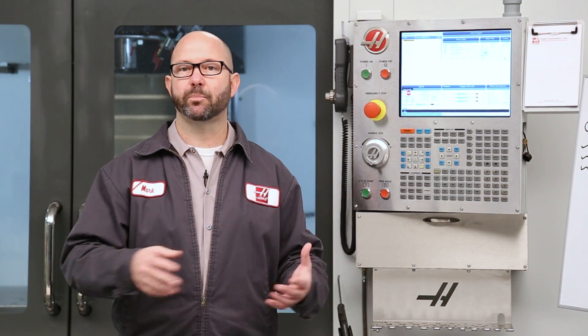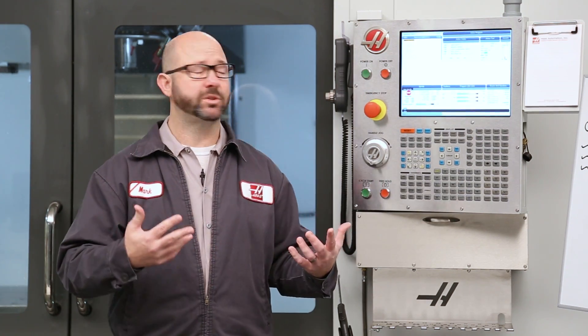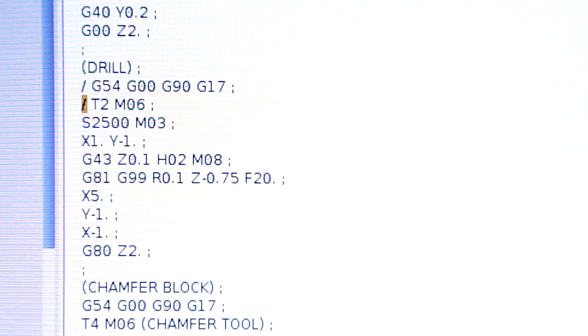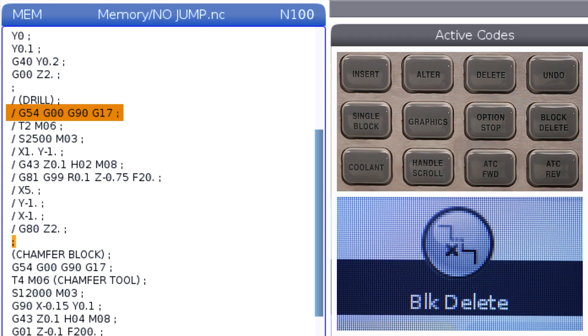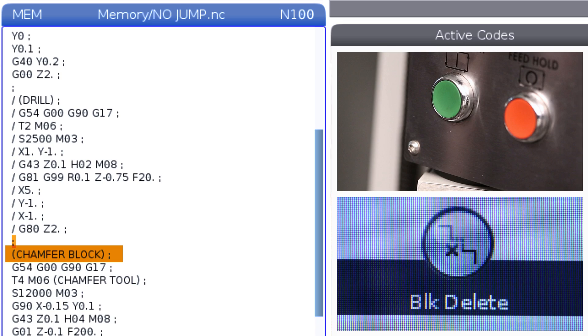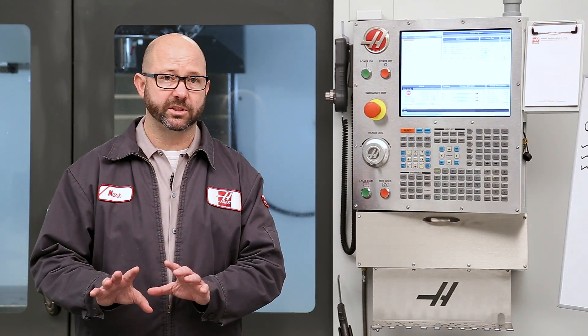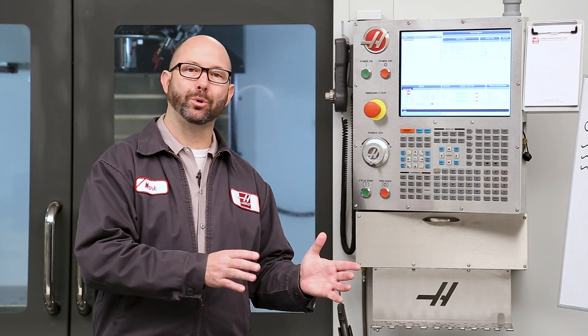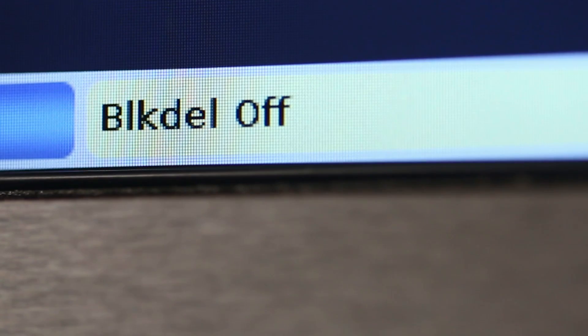So when would we want to use an M99 jump? We're going to use it if we want to jump over or ignore large sections of code. If I just want to skip or ignore a couple lines of code, I'm going to use Block Delete. When Block Delete is on, the control ignores the code following a forward slash on that same line. In this example, if we press Block Delete, then the control would ignore all of these lines of code with the forward slashes. This would be great if I wanted to make some parts with holes and others without. I could go back and forth between holes and no holes just by pressing Block Delete.